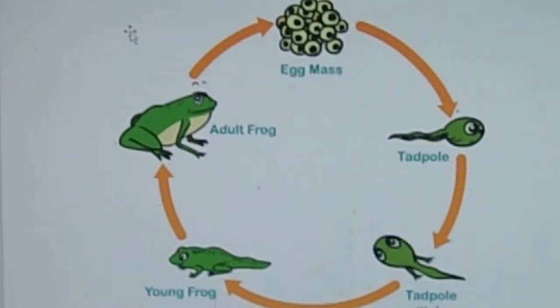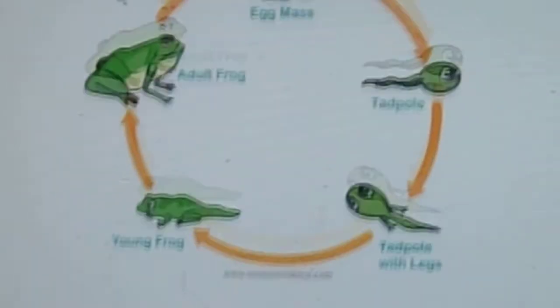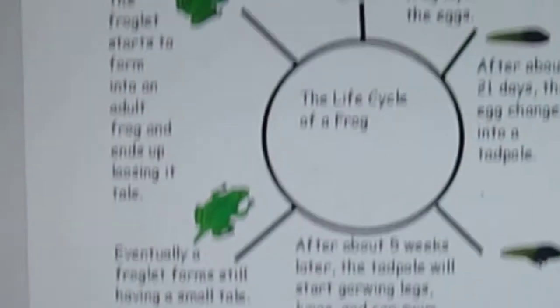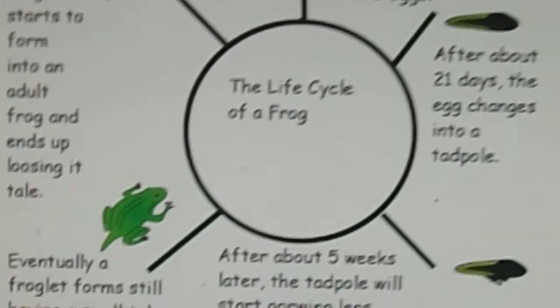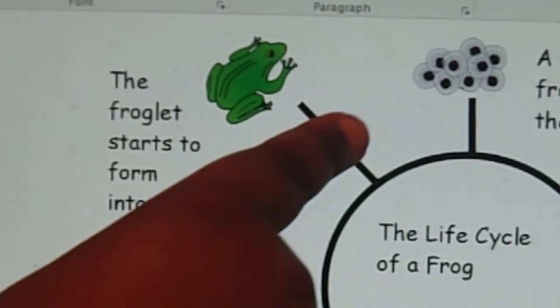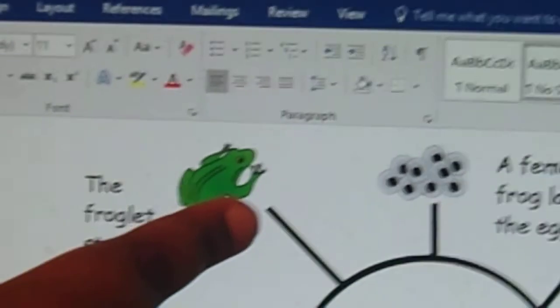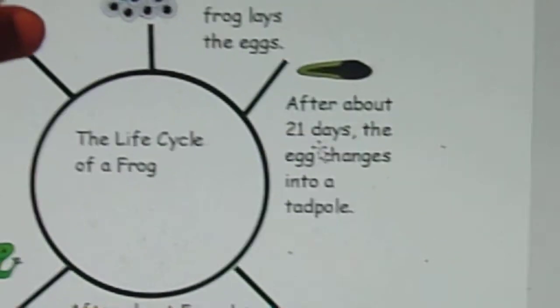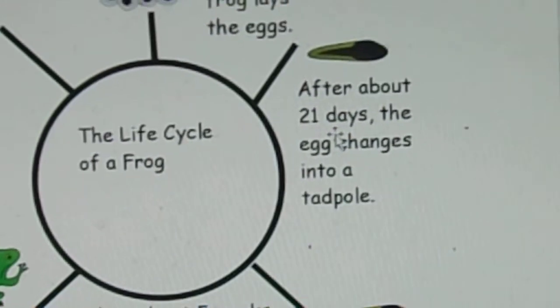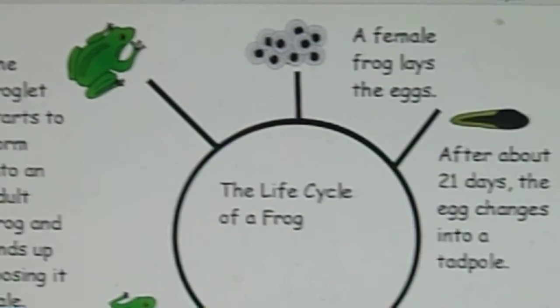This one here you did is almost the same thing, Louis — in fact, it is. This one tells the time. Where's the first stage? Point to the first stage for me. Okay, that's the very top one — that's the first one, right? And that's when the eggs are being laid by the female frog. Okay, now this is the second stage — and that's about 21 days. The eggs change into a tadpole. About five weeks later, the tadpole starts to grow legs.